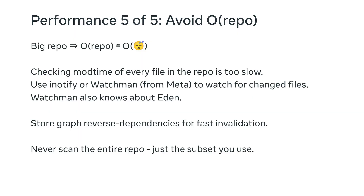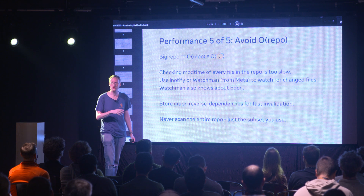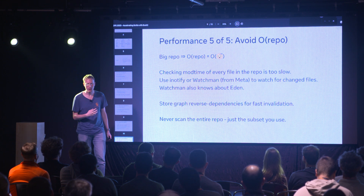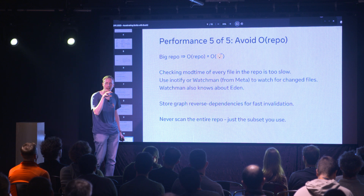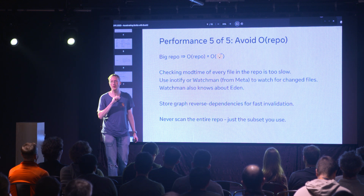The final trick is really a problem to avoid. If you have a big enough repo and you naively look at the whole repo, you're toast. Checking the mod time of every file is hilariously slow — we're talking minutes. So we use iNotify and Watchman, which is an iNotify wrapper, to see which files have changed so we can quickly invalidate things. We also have to be very careful to stick to the subset of the repo that we actually care about.